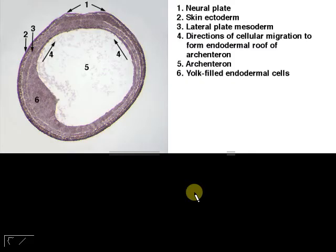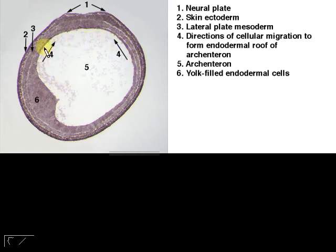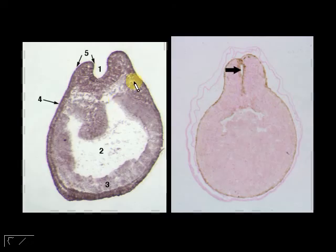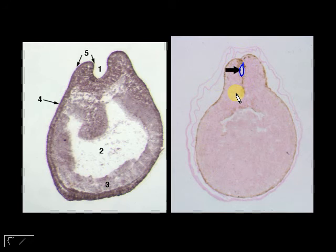These are some of the slides you should have seen. That's the neural plate, this is the endoderm, and this is your archenteron. This is the lateral plate mesoderm beginning to divide. Eventually, this shows the formation of the neural groove, which will close to form the neural tube. As of this point, gastrulation has ended.